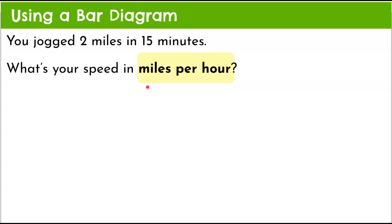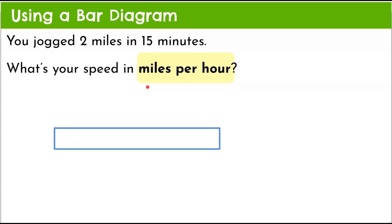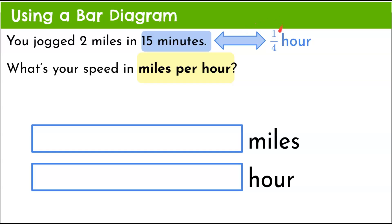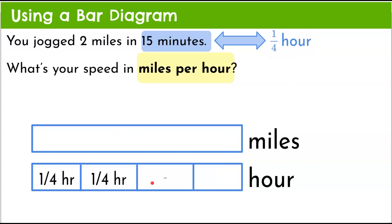First, we're going to model this using a bar diagram. We're going to create two bars — one to represent miles and one to represent the hour. We know our time has to be our anchor — that's what we know has to be one. We're told 15 minutes, and in terms of hours, 15 minutes is one-fourth of an hour. So we're going to take the bottom bar, which has to equal one hour total, and divide it into fourths — one, two, three, four — and we know each fourth is a quarter of an hour, or 15 minutes.